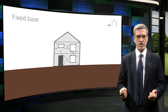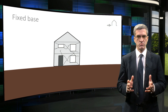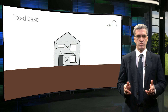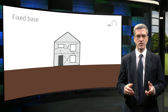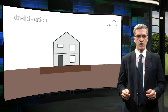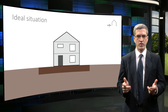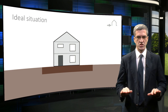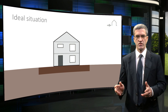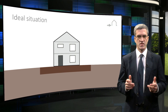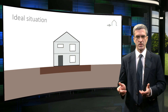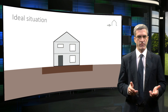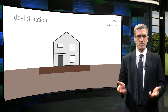Cracks may appear and become larger. Chimneys, gables and parapets may break. There may even be partial or whole building collapse. Imagine if a building were placed on a perfect, frictionless horizontal sliding surface. In such a case, horizontal forces could not be transmitted to the building and therefore there would not be any building damage.